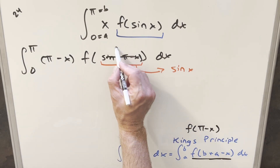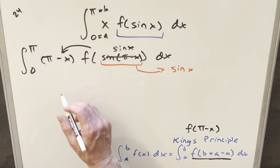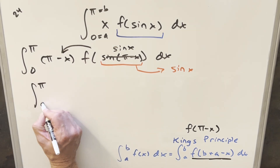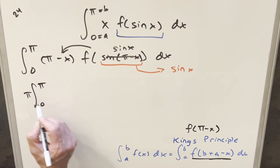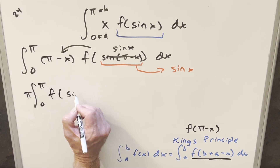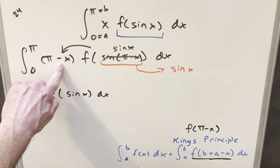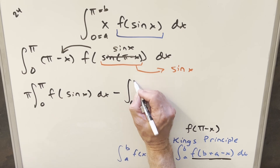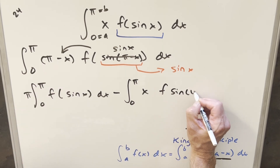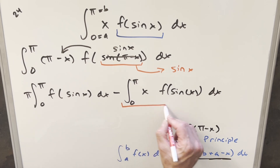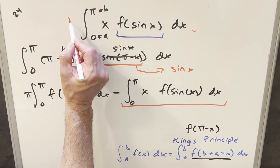Transforming back to sine of x, we take f of sine of x and distribute it into the pi minus x, then break this up into two integrals. The first one has pi times this function — I can bring the pi out front as a constant — and then we have f of sine x. Then we have a minus between the two integrals, and for the second integral we just have x times f of sine of x. We notice this second integral is the same exact thing as our original integral.